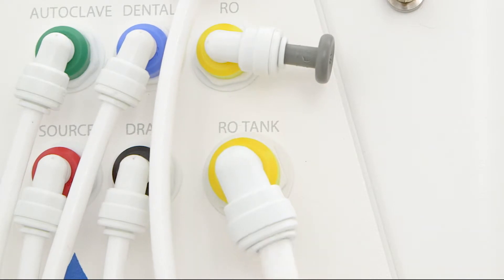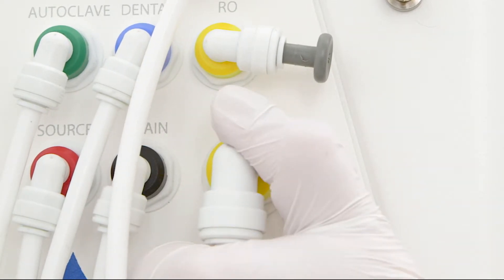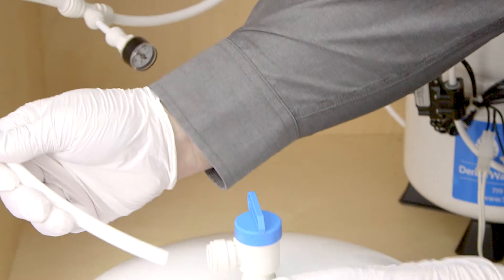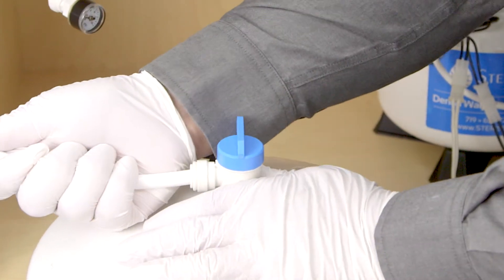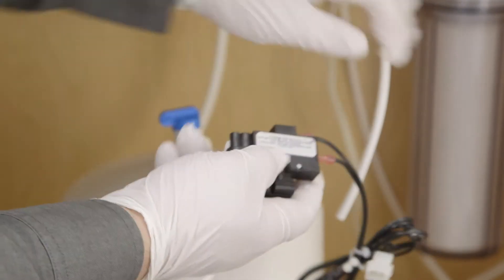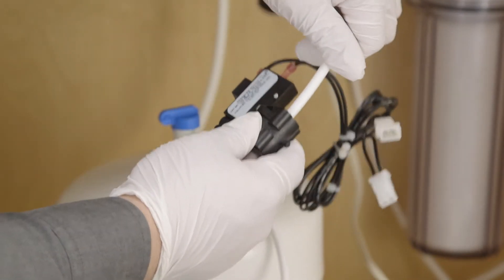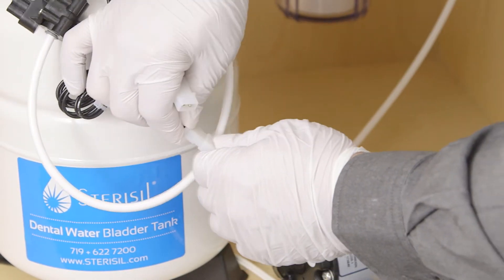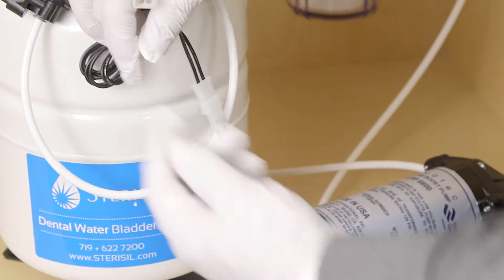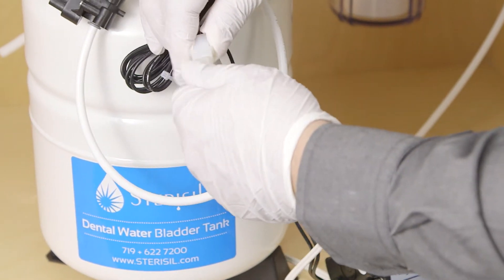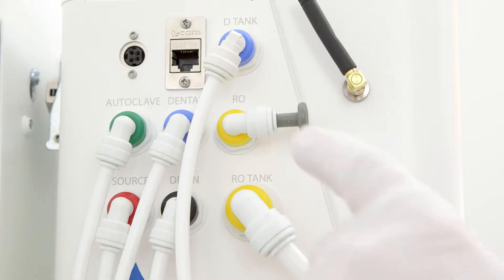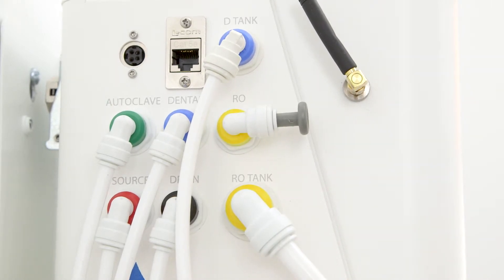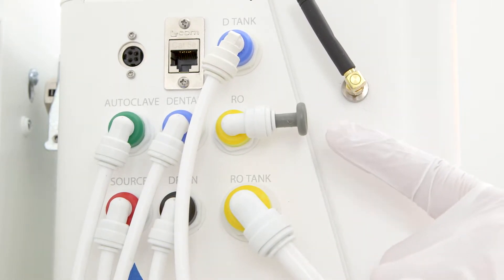RO tank port. Run a three-eighths inch line from the RO tank port on the system to the three-eighths inch tank ball valve on the RO water storage tank. The pressure switch for the booster pump must be installed on this section of tubing. Make sure you have enough length on the power cable to reach between the pump itself and the section of tubing with which you intend to merge the pressure switch. You'll now be left with a yellow RO port. If no auxiliary reverse osmosis water will be used, then this port should remain plugged.